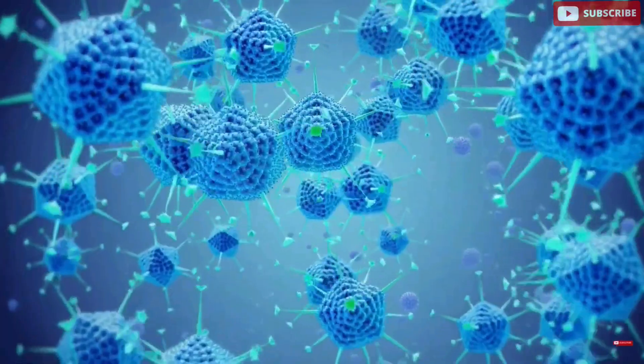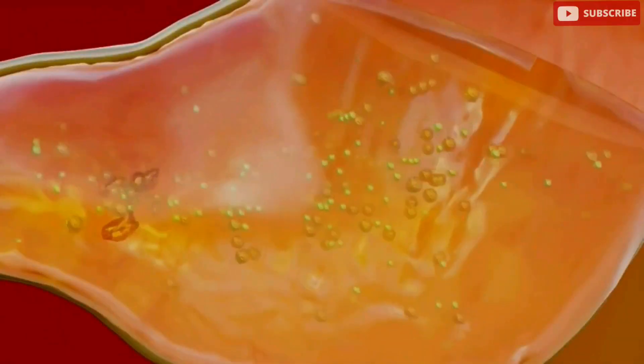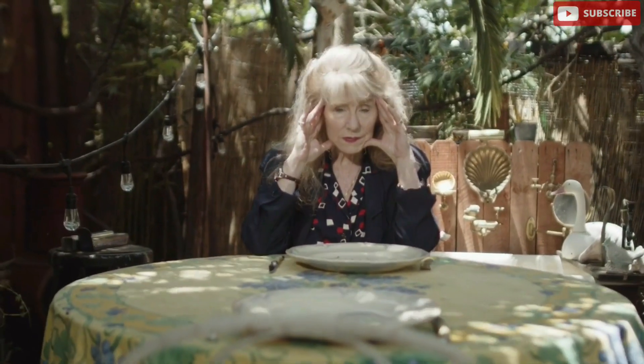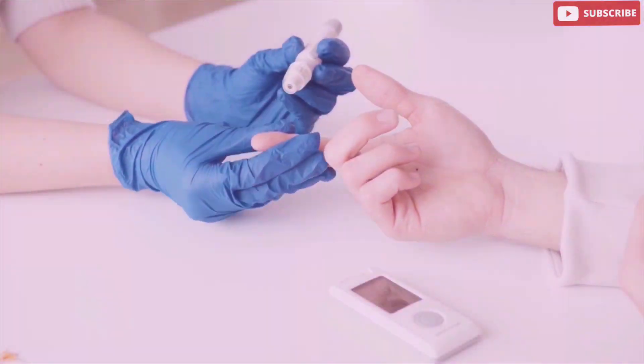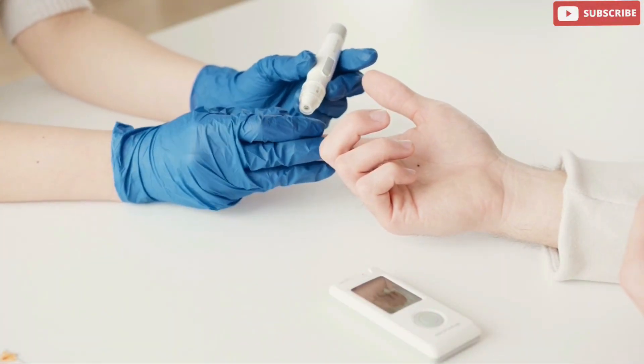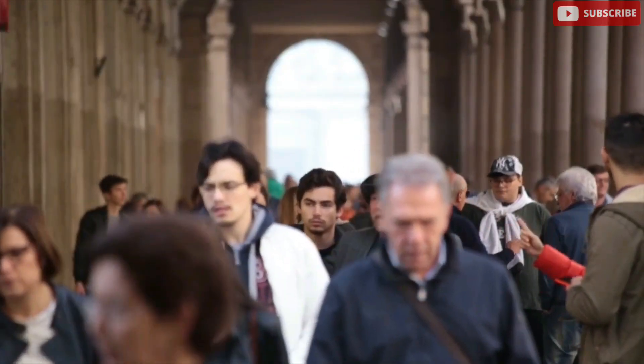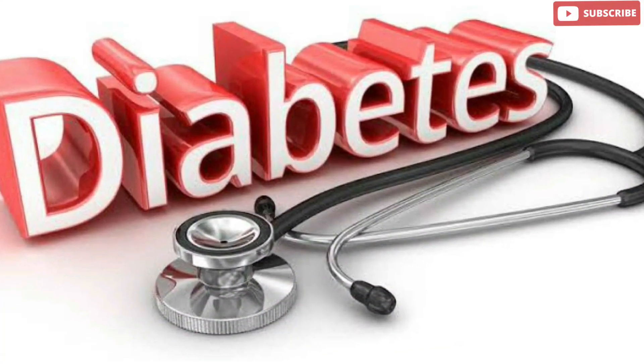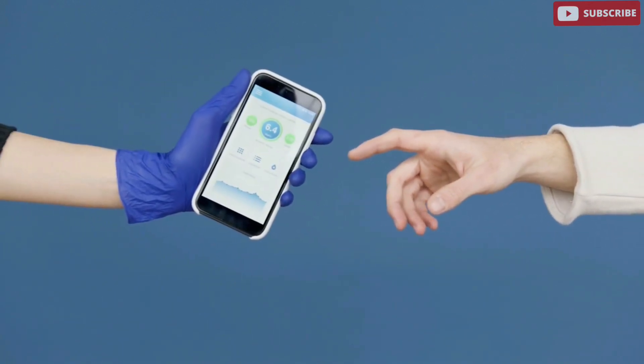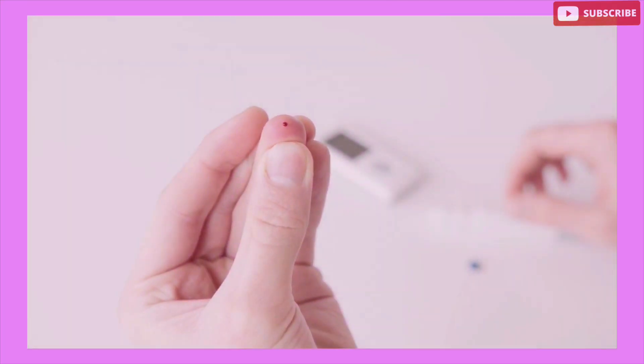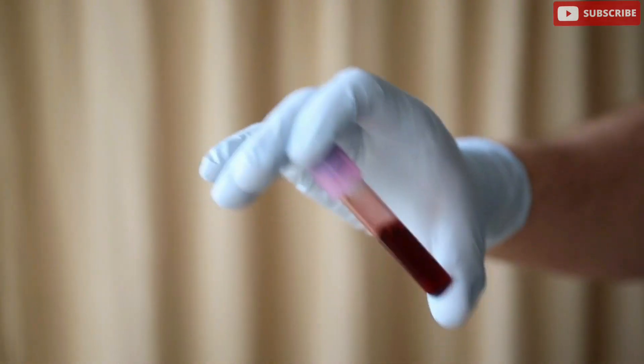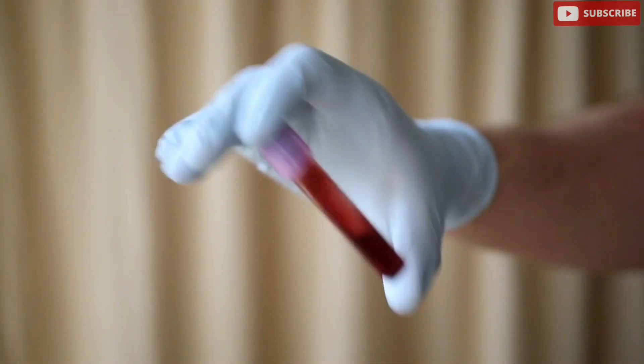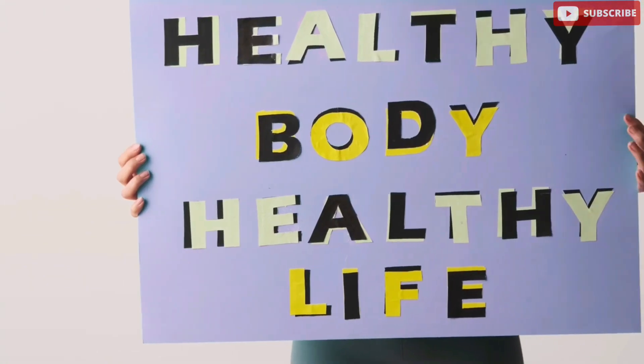When you skip dinner and extend the fasting period, you can enhance insulin sensitivity. This can be particularly beneficial for people with insulin resistance or type 2 diabetes, as improved insulin sensitivity helps maintain stable blood sugar levels, which helps reduce the risk of developing diabetes-related complications. It can even help manage the condition.